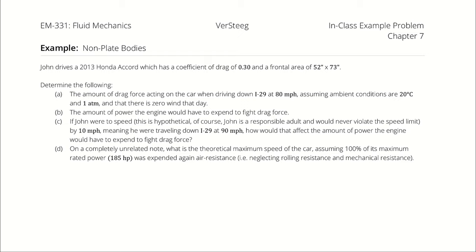The amount of power the engine would have to expend to fight drag force for part A. Then if John were to speed, and this is hypothetical of course, John is a responsible adult who would never violate the speed limit by 10 miles an hour, meaning he were traveling down I-29 at 90 miles per hour, how would that affect the amount of power the engine would have to expend to fight drag force? Then lastly, on a completely unrelated note, what is the theoretical maximum speed of the car, assuming 100% of its maximum rated power of 185 horsepower was expended against air resistance, i.e. neglecting rolling resistance and mechanical resistance.